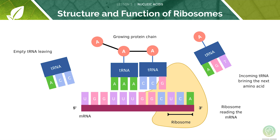Don't worry too much about this diagram as we'll look at protein synthesis in more detail in section four. In this diagram we can see a ribosome which is reading mRNA. mRNA is a copy of the base sequence from the DNA. The ribosome moves along the mRNA reading it base by base, and the correct transfer RNA brings the correct amino acid along.